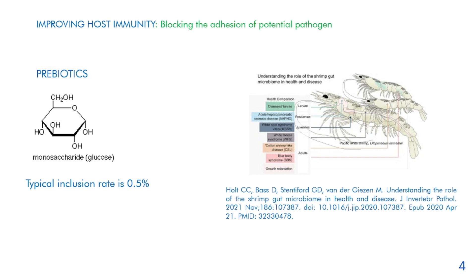Unfortunately, we cannot use banana because of the cost involved. Instead, we use what we call MOS — a monosaccharide, which is a type of glucose — to promote the good bacteria in your gut lining. As shown in this paper, if your gut health is actually improved with the usage of probiotics and prebiotics, you can actually prevent a lot of diseases in the larvae and post-larvae stage. You can find more information in the paper on understanding the role of shrimp gut microbiome in health and diseases.